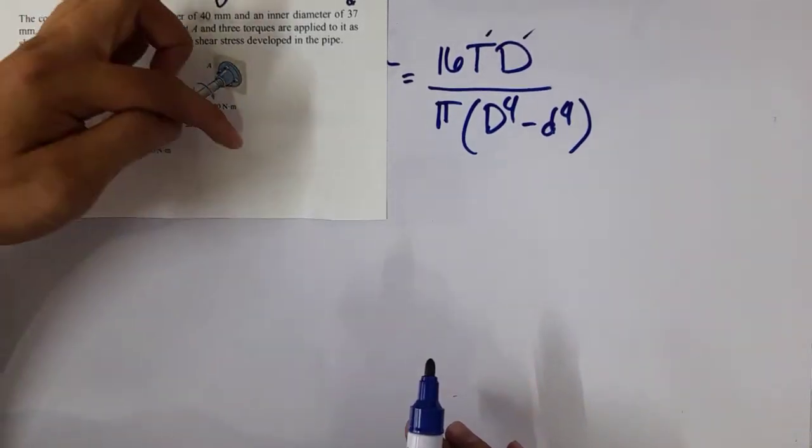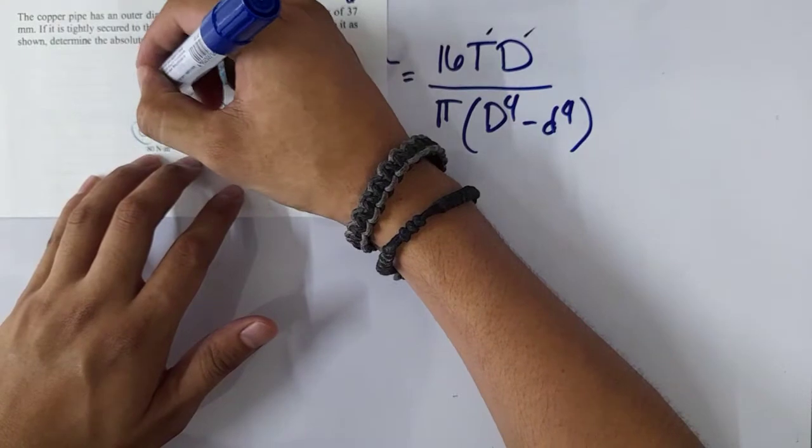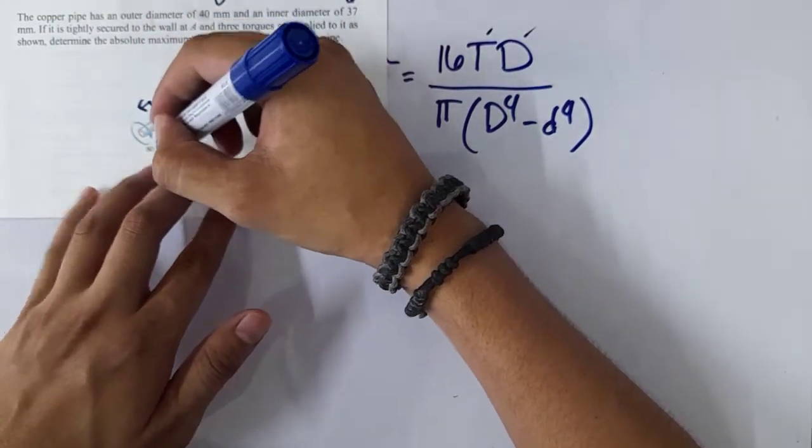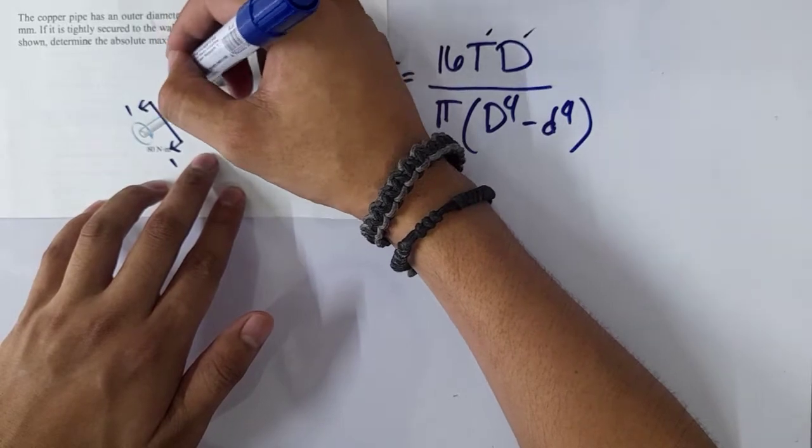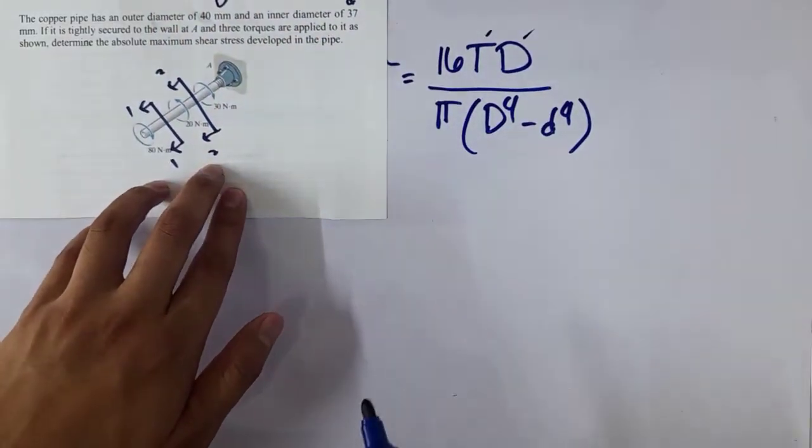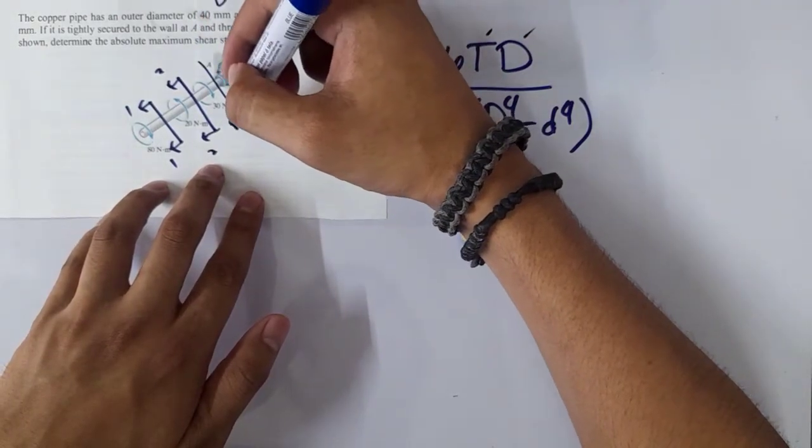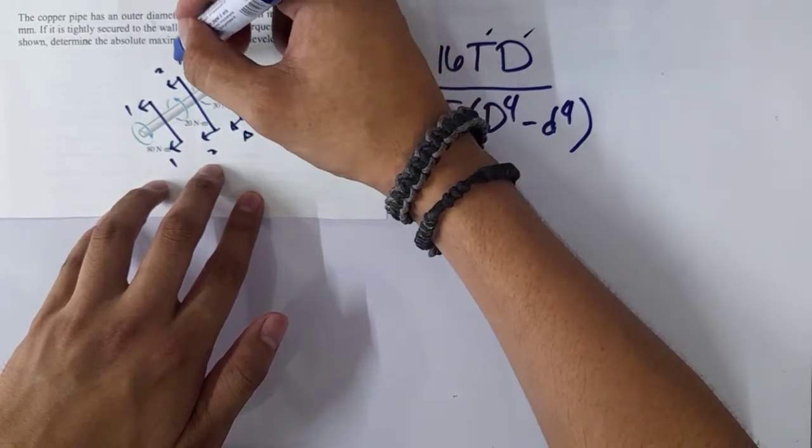How do we find the maximum torque? We just have to cut sections. For example, if we cut here, we consider this one as section 1-1. Then we cut here and name it section 2-2, and then the last is when we cut here, section AA.